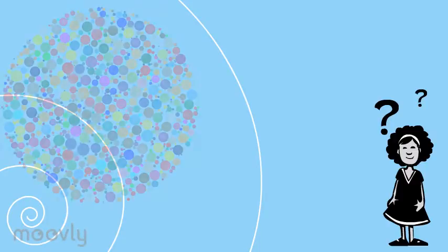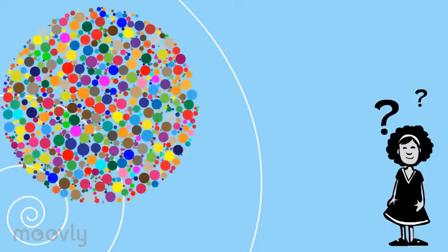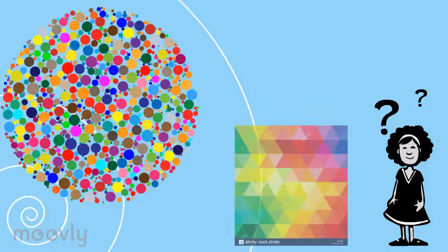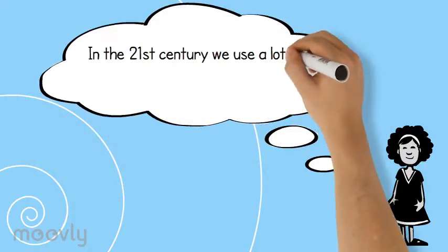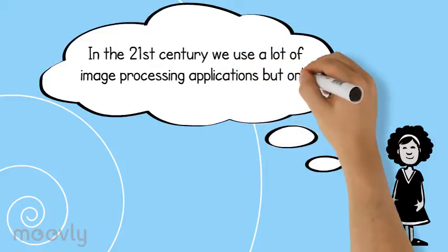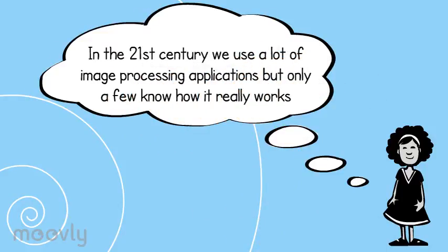When you hear about images, you'll think of colors and shapes. But that's not all. Image processing is a whole kind of science and it has many different applications in our lives. In the 21st century, we use a lot of image processing applications, but only a few know how it really works.